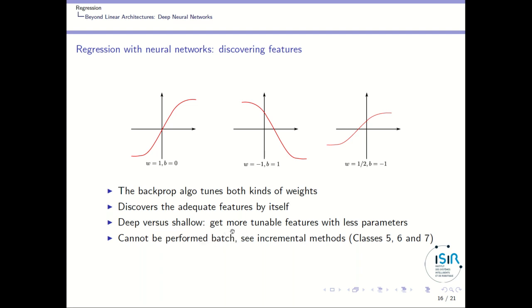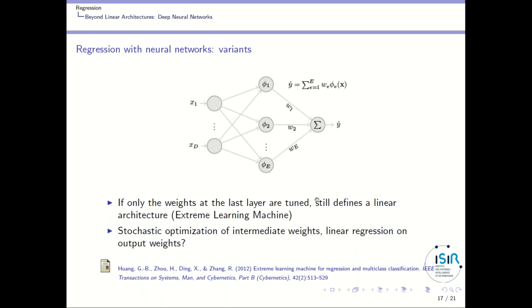One point is that with several layers you cannot perform batch linear regression directly at the end — you have to use incremental methods because you are tuning the intermediate weights at the same time as performing the linear combination. Those incremental methods will be presented in the next classes. You can also have different variants: for instance, you can set those intermediate weights once and for all — treating the basis functions as fixed — and then only tune the output weights. This is called extreme machine learning and performs quite well without using backpropagation.